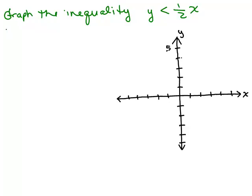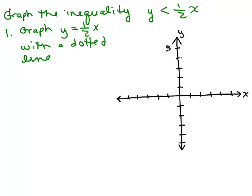So we are going to do step 1, which is to graph y equals 1 half x, but we're going to use a dotted line. And why? Because dotted means it's not part of the solution. So get out your piece of graph paper and go ahead and graph y equals 1 half x, but instead of using a solid line, remember to use your dotted line.